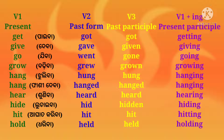Get (paiba): second form — got; third form — got; fourth form — getting. Give (debba): second form — gave; third form — given; fourth form — giving. Go (jiba): second form — went; third form — gone; fourth form — going.